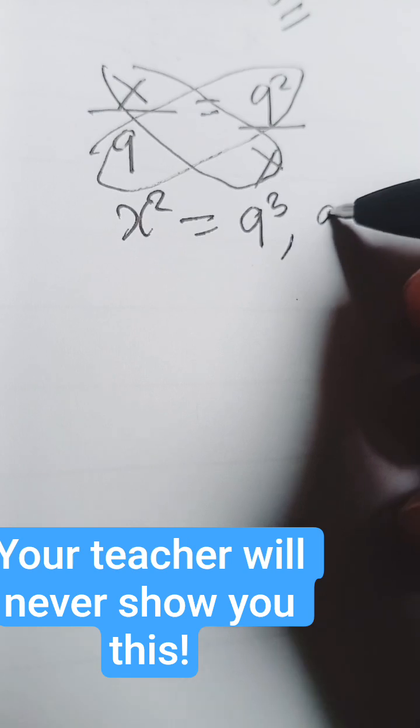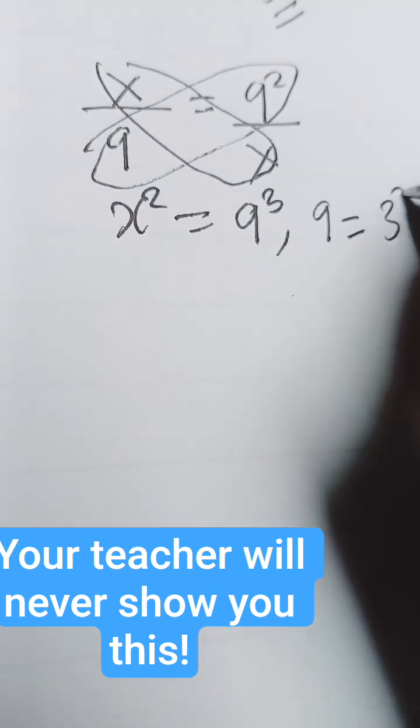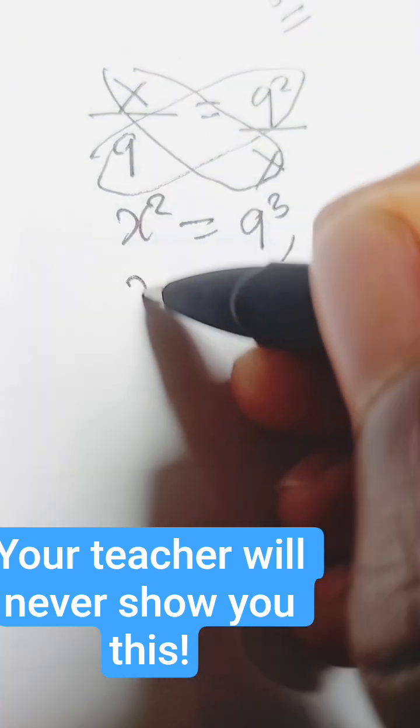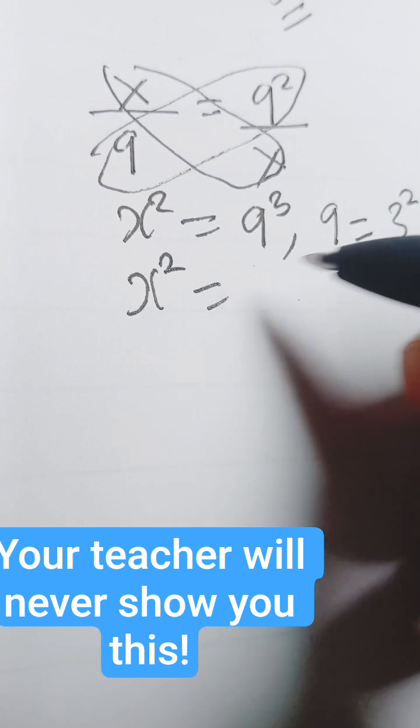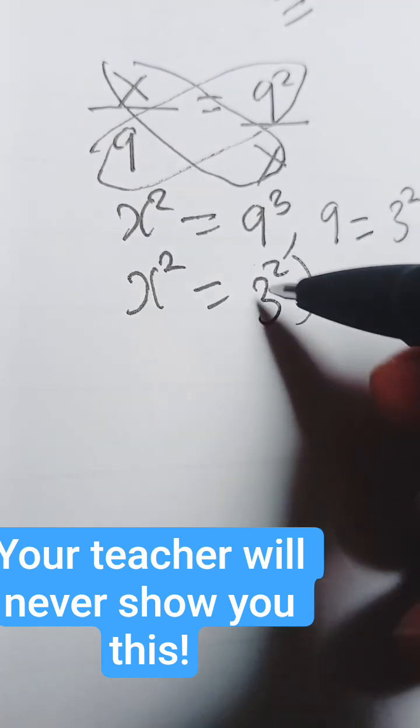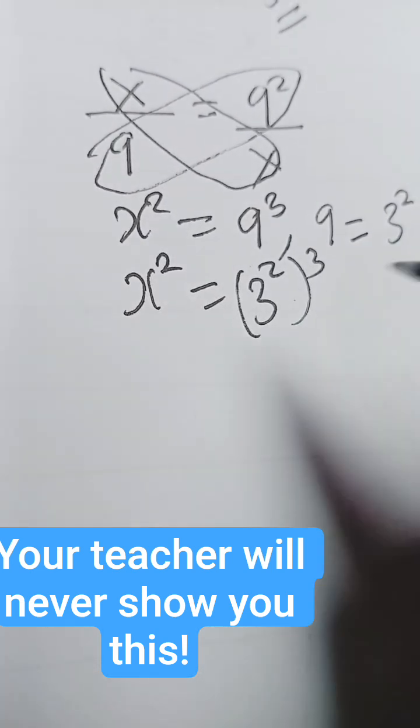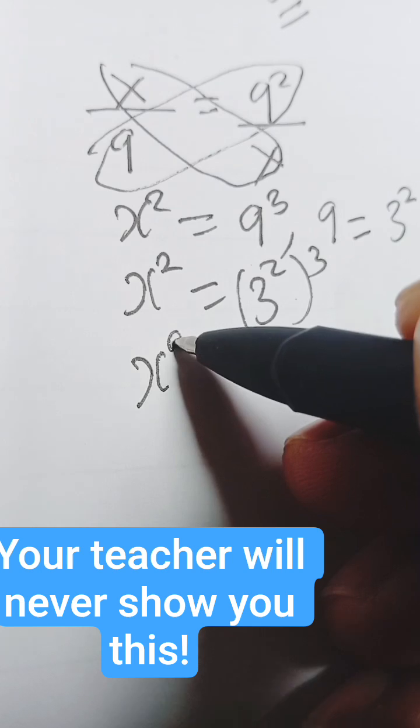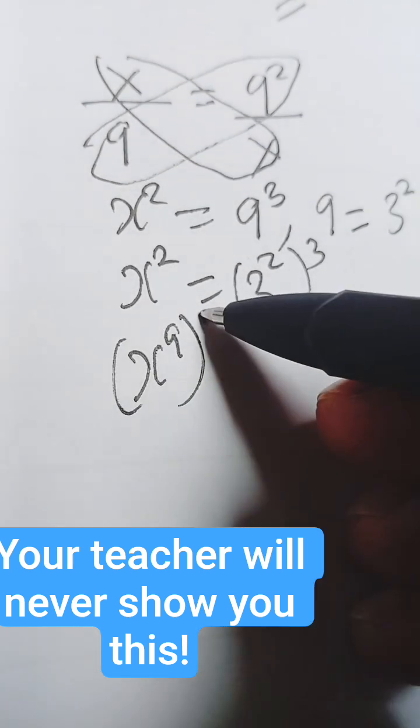But we know that 9 is 3 squared, so if we substitute that here, we'll have x squared equals 3 squared to the power of 3. From the law of indices that says that x to the power (a times b)